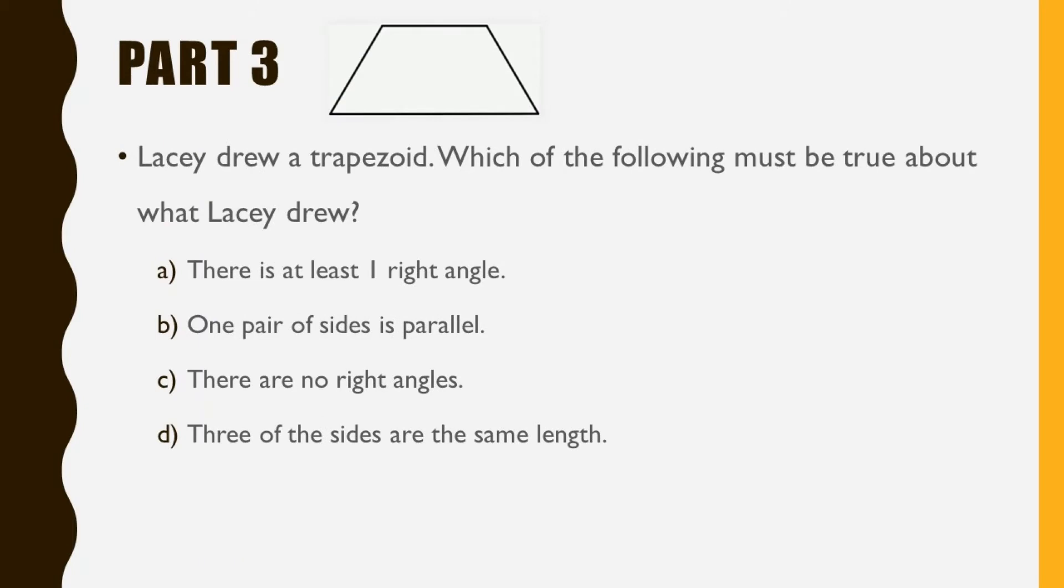Part 3. Way to show that persistence, Kipsters. Lacey drew a trapezoid. Which of the following must be true about what Lacey drew? A. There is at least one right angle.